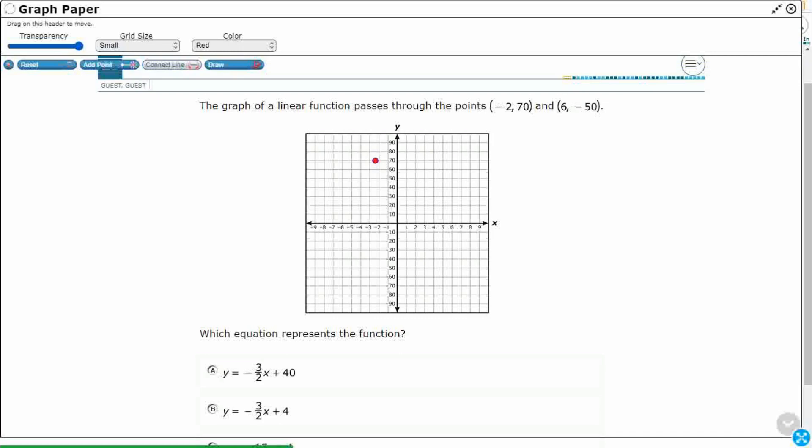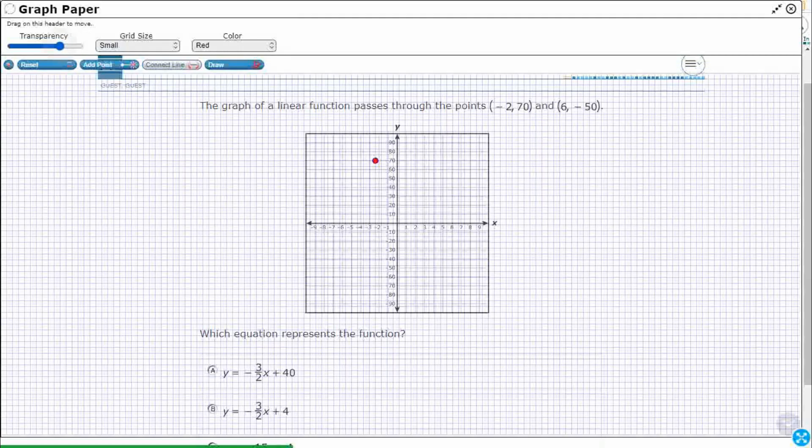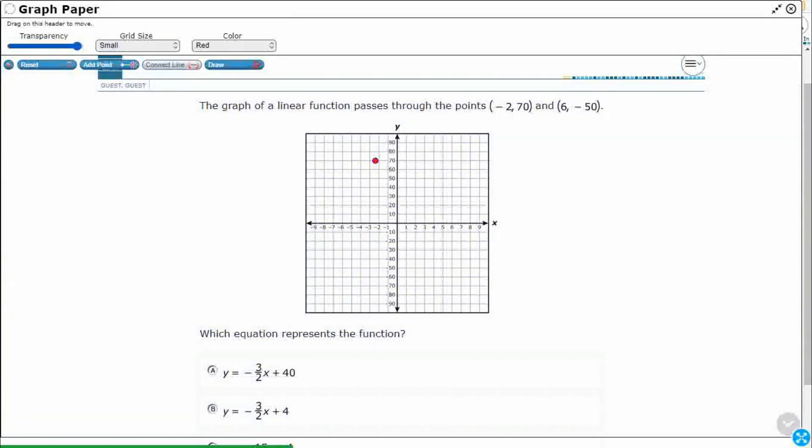So negative 70 looks like it's going to be right around here. And then the problem is, we're trying to put this on this grid and it doesn't match up exactly, so we'll get an approximation. And then 6, negative 50, so it goes down right about there. That's about the line. It looks like we're going to get a negative slope, so this is what we can tell so far.